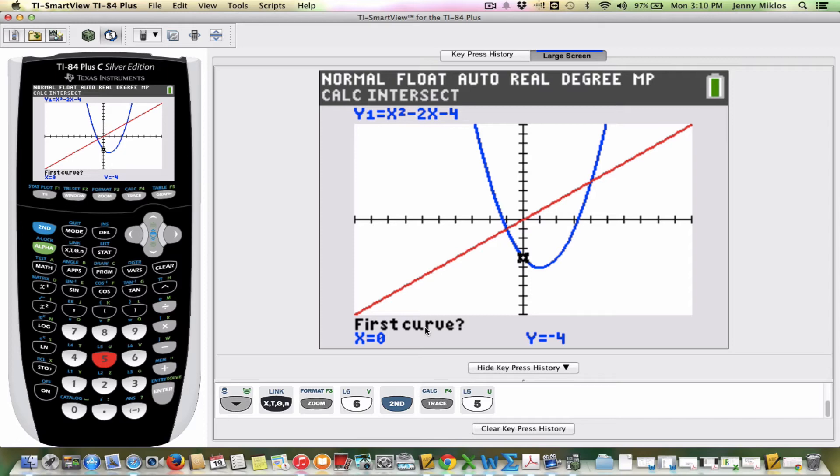In this case, I just have two lines. So I'm going to press enter. Yes, that is my first curve. Now notice, it says second curve, and it jumped up to the other equation. So I'm going to press enter again.